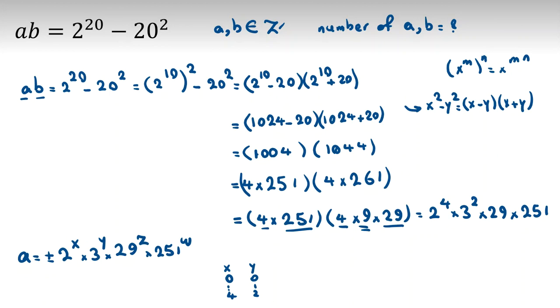Y is 0 to 2 because 3 to the Y here is 3 squared. And for Z, it can be 0, 1. For W, it can be 0, 1.